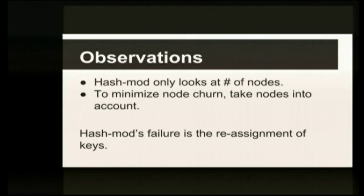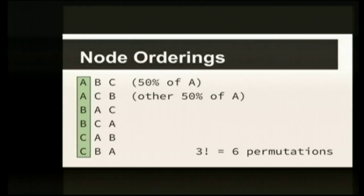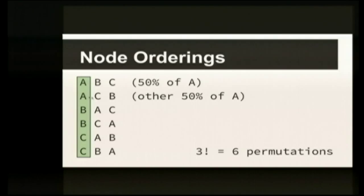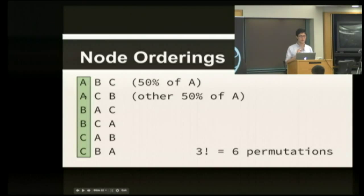Is there another technique? We have to keep the shuffling as small as possible and we'd like to take the nodes themselves into account. The failure of hash mod is reassignment of keys. With hash mod, you basically randomly assign some key to some node A, B, or C. What we'd like to do instead is try to keep those from reshuffling. So instead of just assigning to A, B, and C, let's assign it to some ordering of all of the nodes. The keys assigned to A will be split between the ordering A, B, C and the ordering A, C, B — half the keys go to each ordering. The node that the key actually is on is the first node in that list.